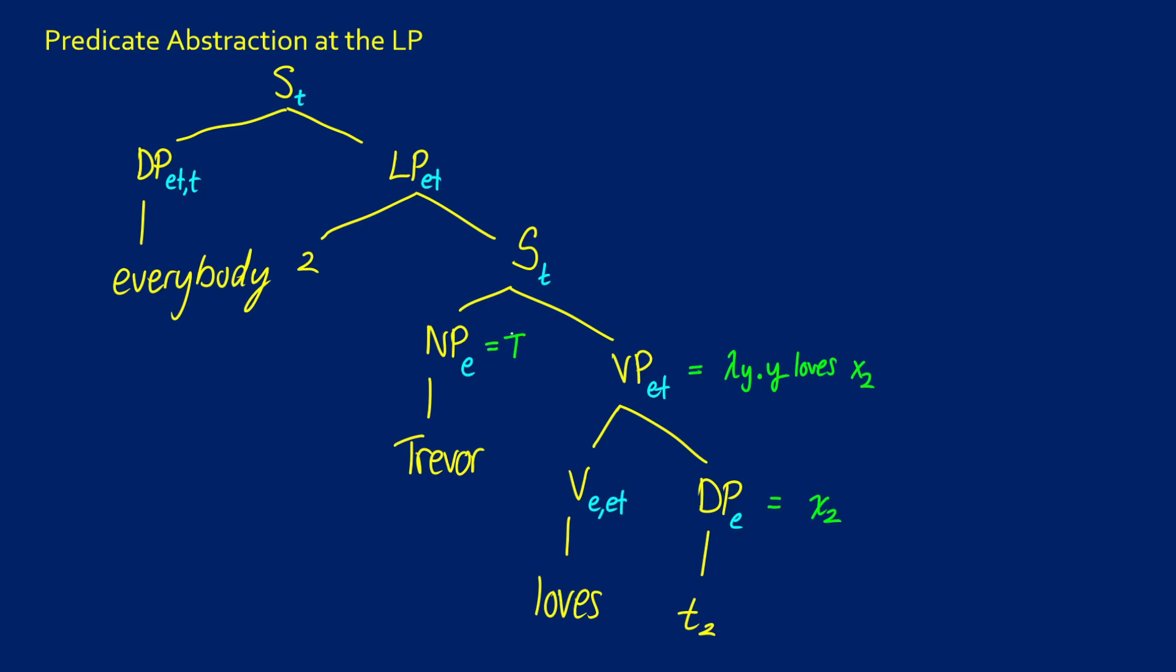With Trevor, we're going to call this T. So this sentence is going to be true if and only if T loves X2. Now at the LP, what's going to happen is this 2 is going to tell us which variable we can abstract over.